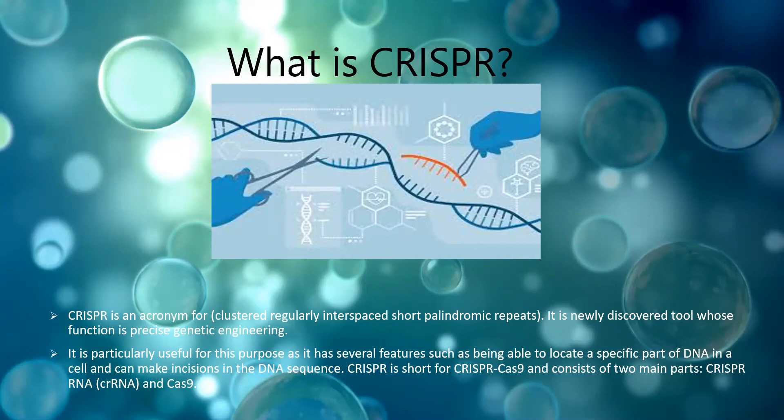CRISPR is particularly useful for genetic engineering as it has several features, such as being able to locate a specific part of DNA in a cell and make incisions in the DNA sequence. CRISPR is short for CRISPR-Cas9 and consists of two main parts.